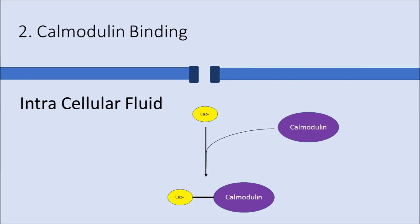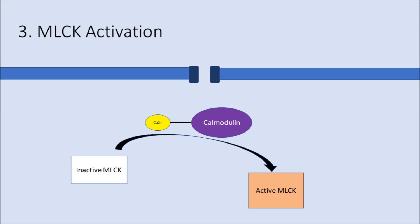In smooth muscle, this intracellular calcium then goes on to bind to a protein called calmodulin. This calcium and calmodulin complex then go on to activate myosin light chain kinase. That's the MLCK you see in the picture.